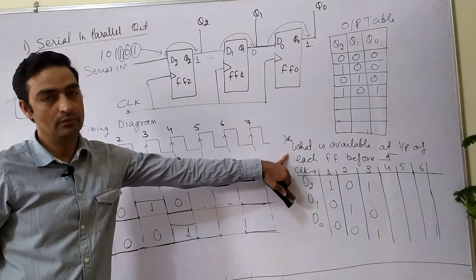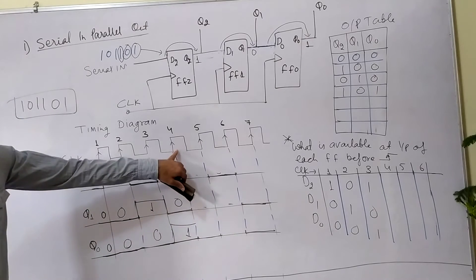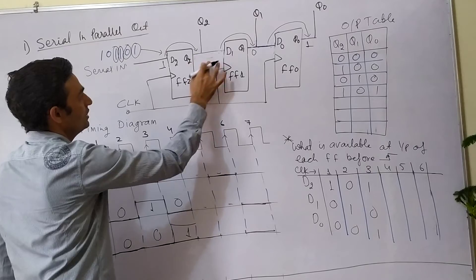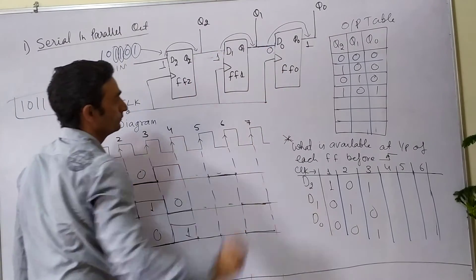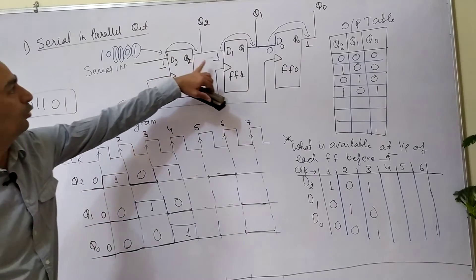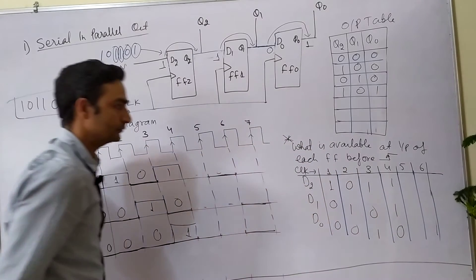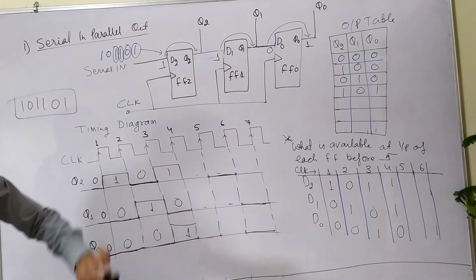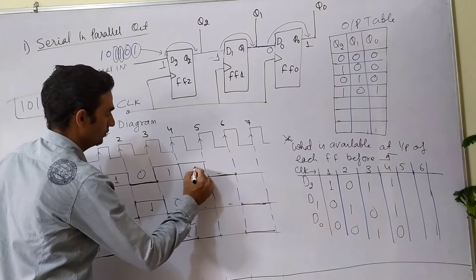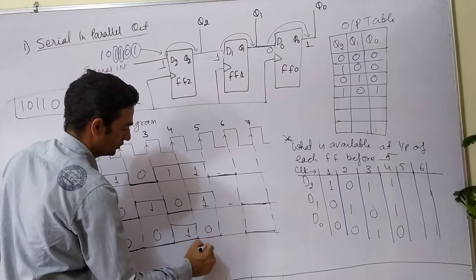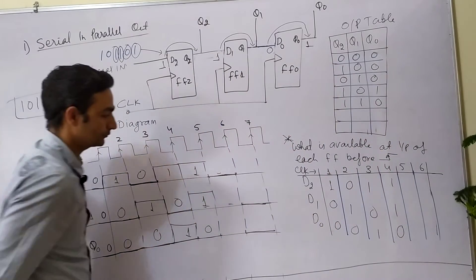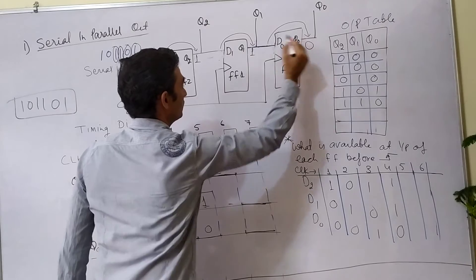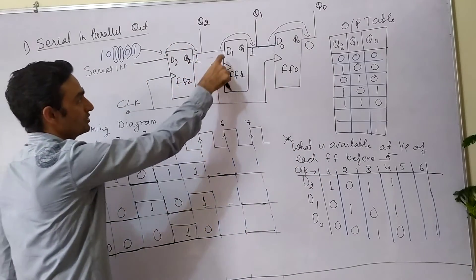What is available at the input of each flip-flop before the fourth clock edge? Before the fourth clock edge, D2=1, D1=1, D0=0. After the fourth clock edge, the output will be Q2=1, Q1=1, Q0=0. Whatever is at the input of the flip-flop will reach the output side after the fourth clock edge.